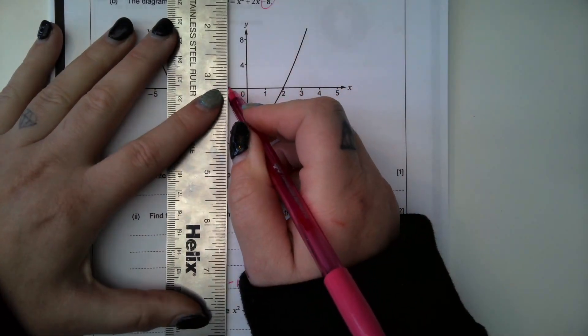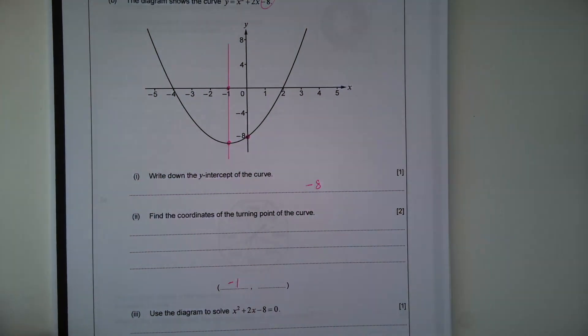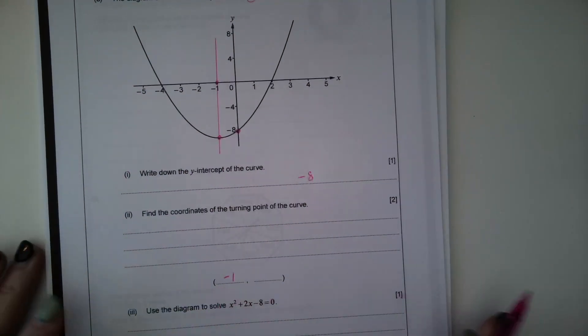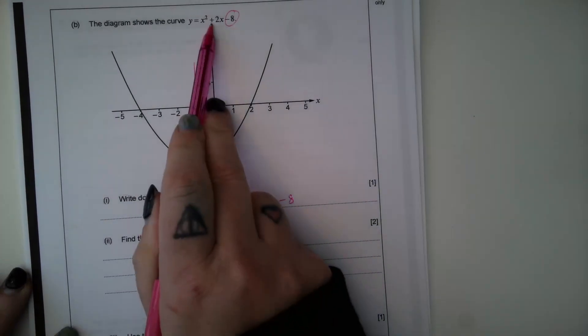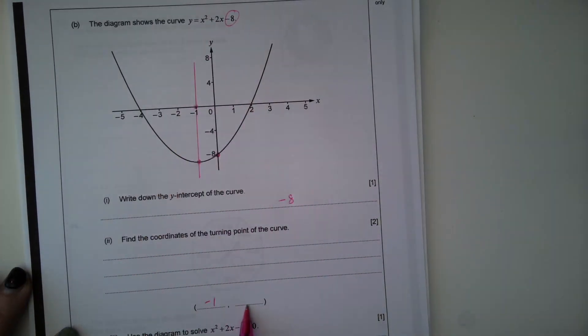So the X coordinate of the turning point, I'll just draw that down here. This point here, this line of symmetry, the X coordinate is negative 1. And I can now substitute that into the equation of the curve to find the Y coordinate that accompanies it.